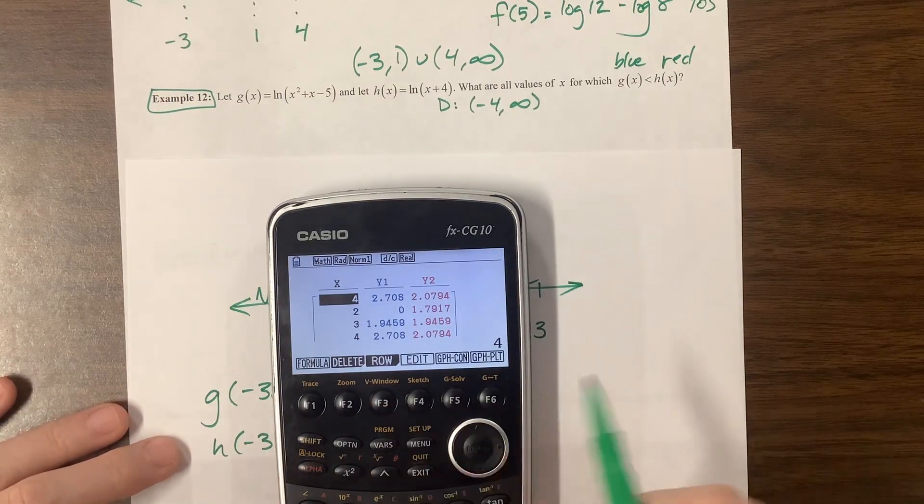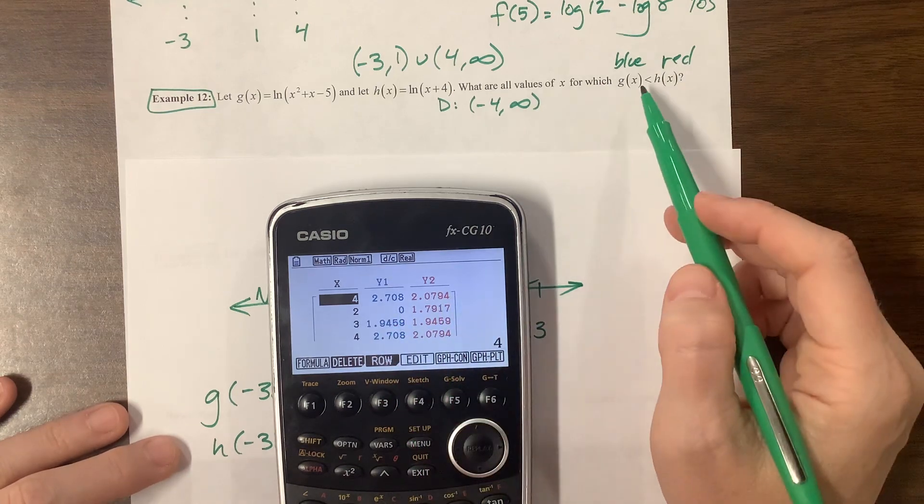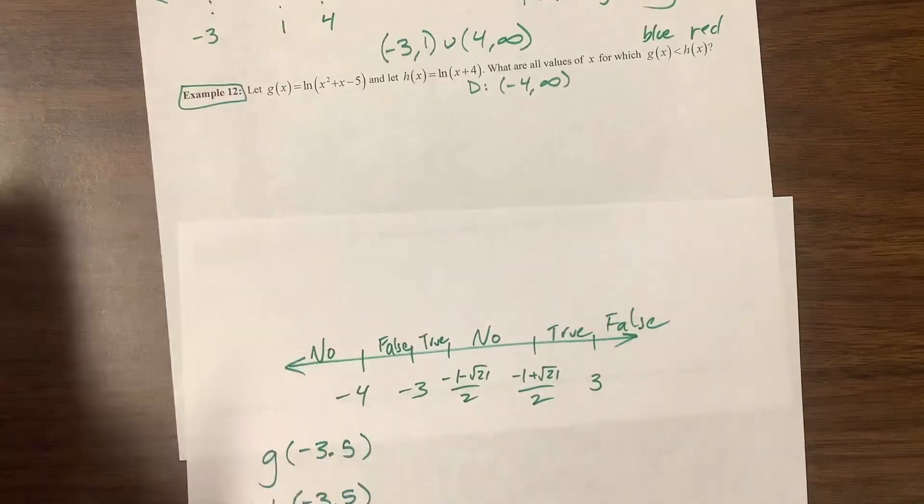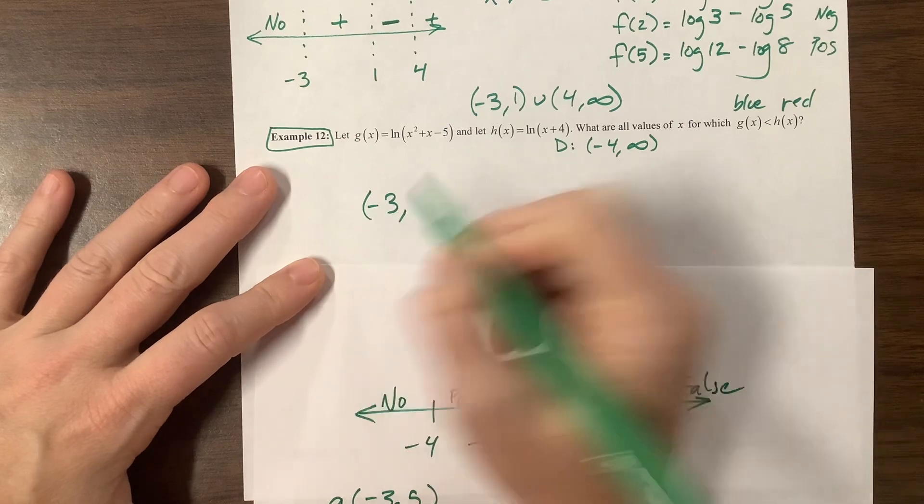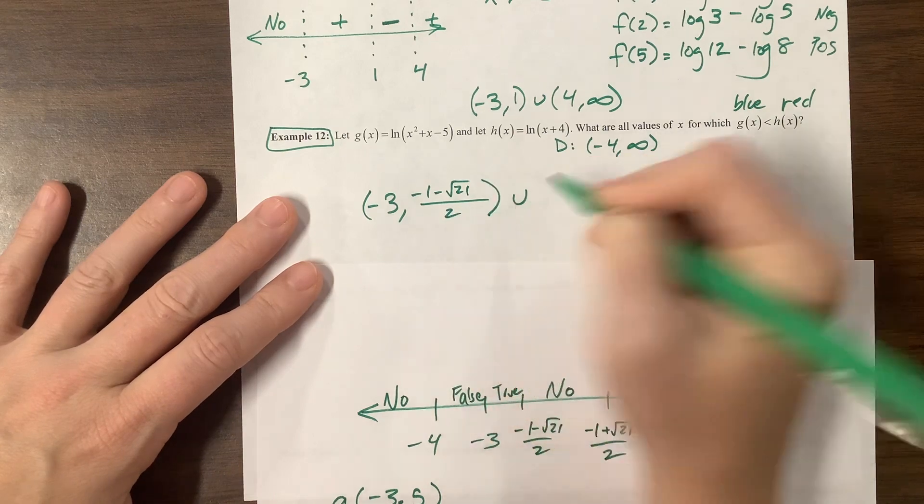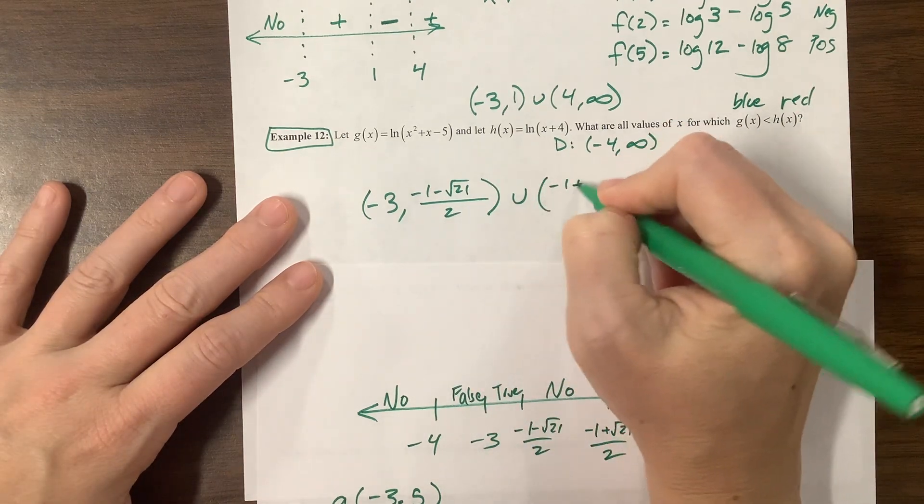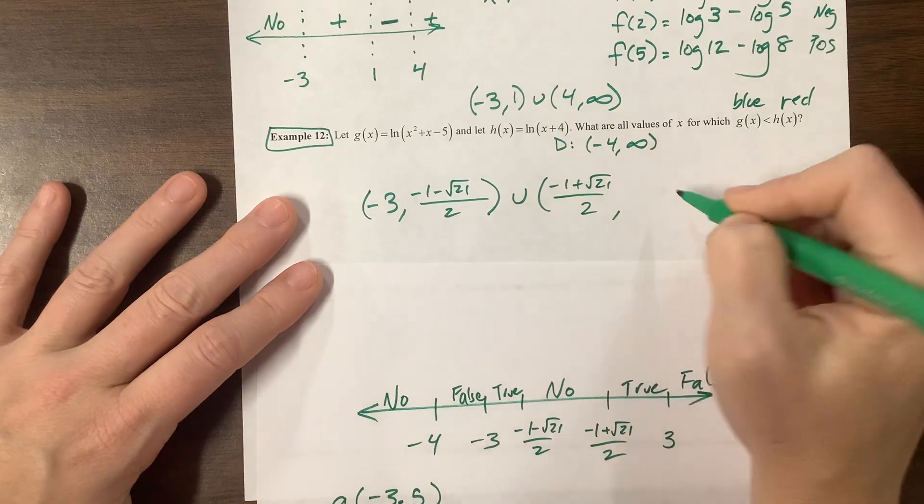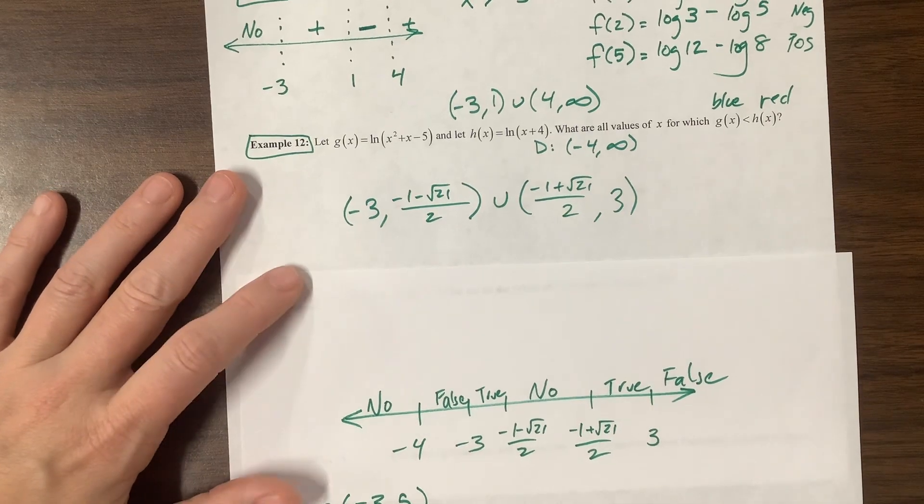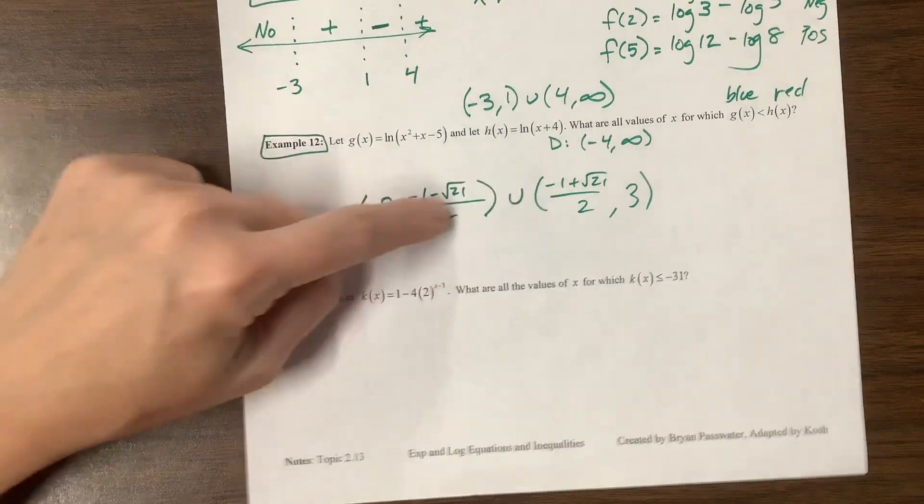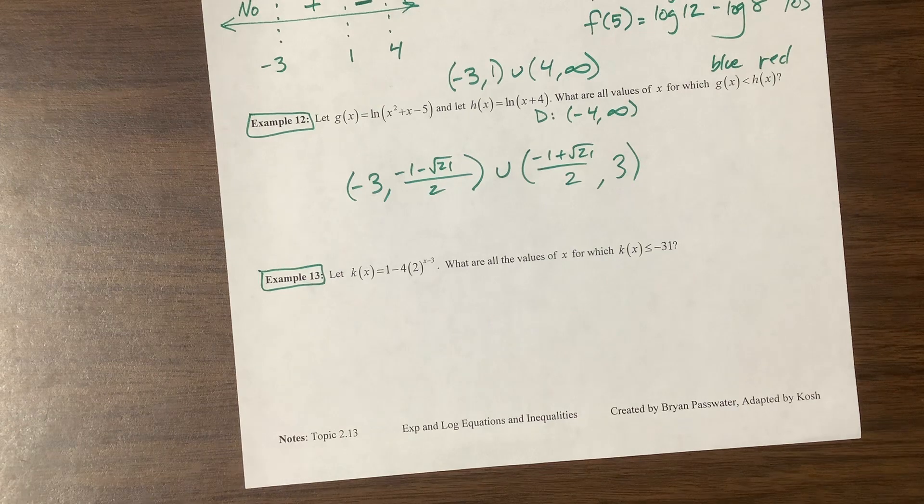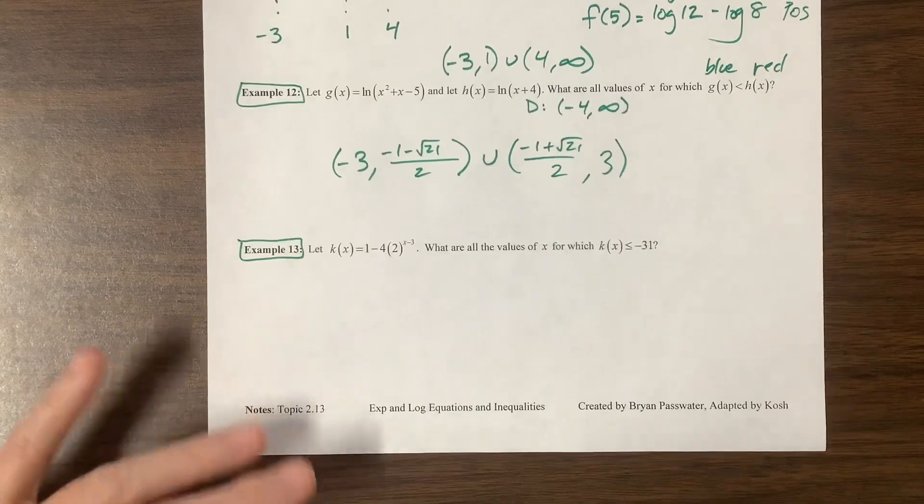Now let's try something bigger than 3. I'm going to plug in 4. Bigger than 3, the blue is bigger than the red, but we wanted it the other way around. So this is false. So if I'm doing this correctly, I think my answer is going to be from negative 3 to negative 1 minus root 21 over 2 union negative 1 plus root 21 over 2 to positive 3. I did not write this problem. I think I'm going to go look at the answer key and then I'll correct it in my fifth video if I'm wrong. Good luck. Hope that's helpful.